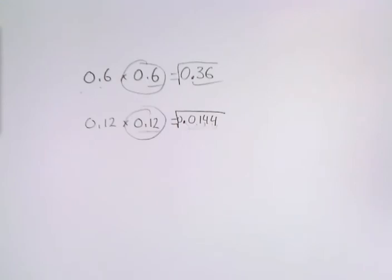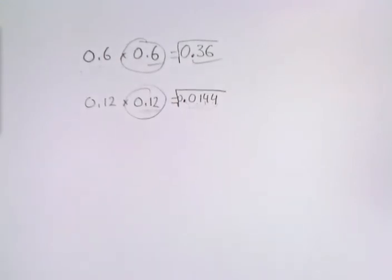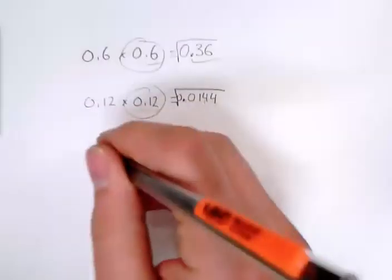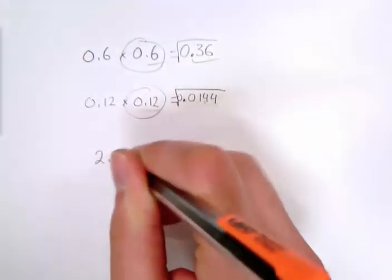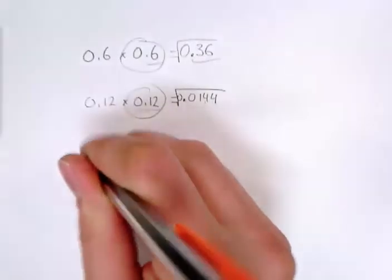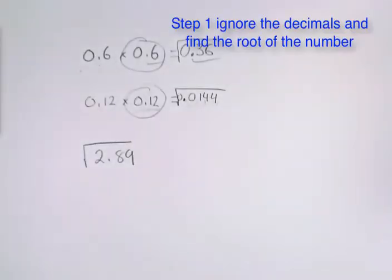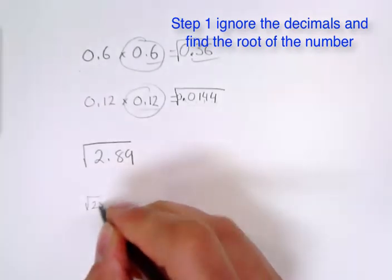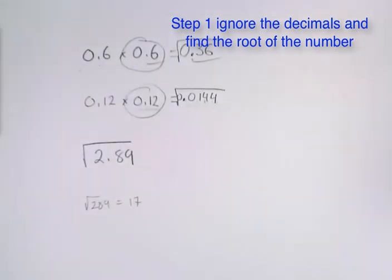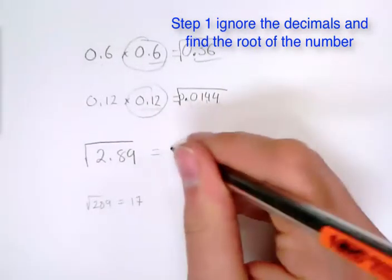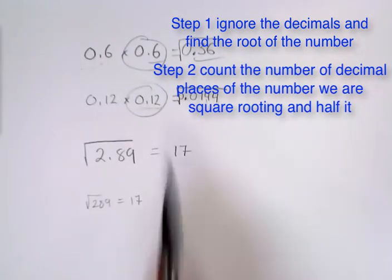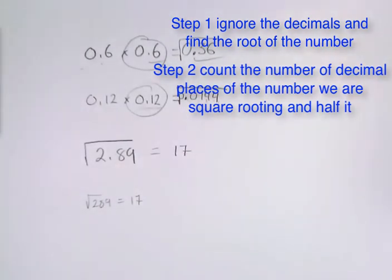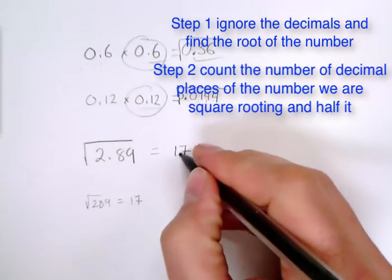Let's try the square root of 2.89. I know the square root of 289 is equal to 17. Now, how many numbers do I have behind the decimal? Two. So my answer is only going to have one number behind the decimal, because we're going to half the amount behind the decimal. So the square root of 2.89 is 1.7.